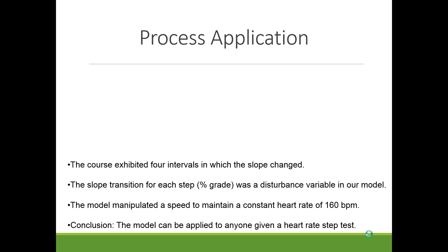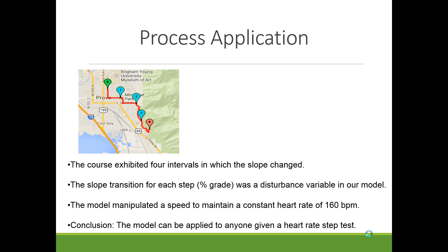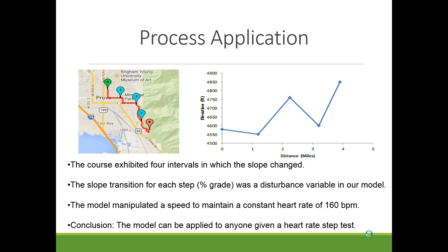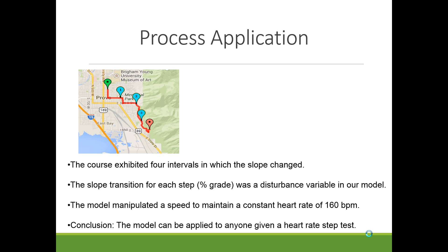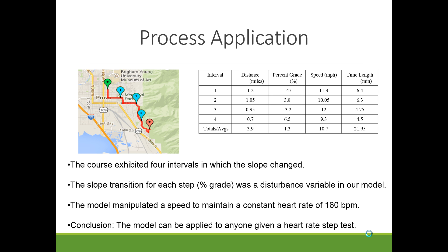Applying this model, we chose an area in Provo with varying slopes. The map shows the course with four different transition points and different elevation changes — for every mile, there was an elevation change giving a percent grade. Downhill sections had a negative percent grade and uphill sections had a positive grade. This determined the manipulated speed Tyler would need to run to maintain a constant heart rate: higher speed for lower grades and lower speed for uphill grades.